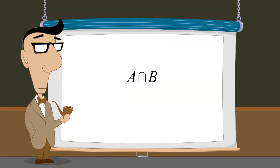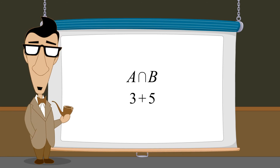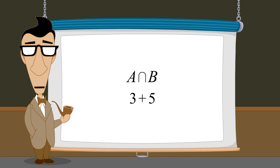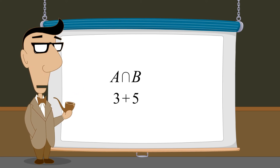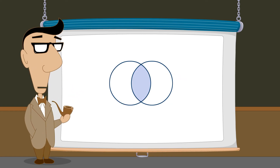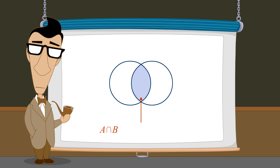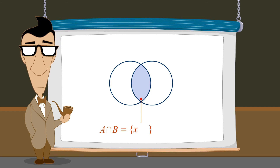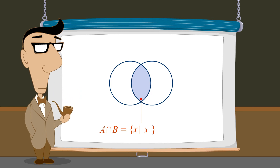Forming the intersection of two sets is a binary set operation, in the same way that forming the sum of two numbers is a binary numerical operation. The result of this set operation is another set, just as the result of this numerical operation is another number. Using SetBuilder notation, we can write the definition of an intersection of two sets formally as: the intersection of sets A and B is the set of all elements X such that X is a member of A and X is a member of B.